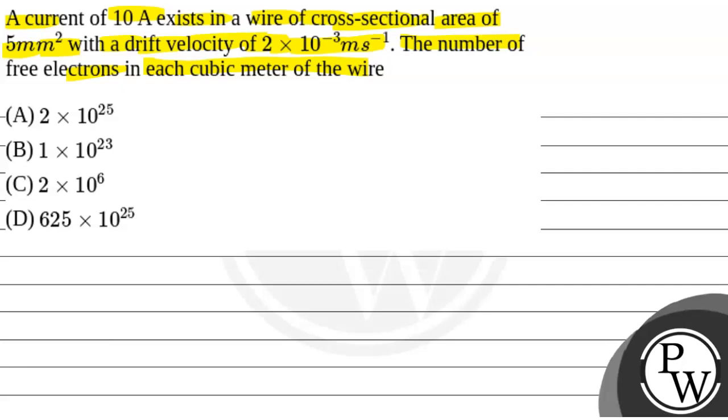We will solve this question. First of all, we will see what will be the key concept used to solve this question. The key concept that will be used is current I is given by N into E into VD into A, where N is the number of free electrons per unit volume, E is charge on electron, VD is the drift velocity and A is the cross-sectional area, I is the current.